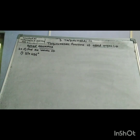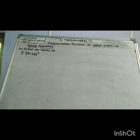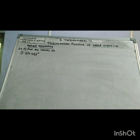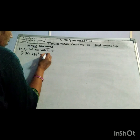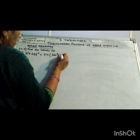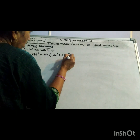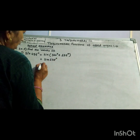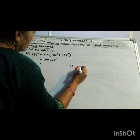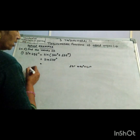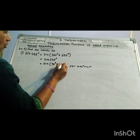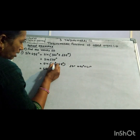Trigonometric functions of allied angles — Example 1: Find the value of sin(495°). Now 495 = 360 + 135 degrees, so sin(495°) = sin(360° + 135°) = sin(135°). And 135 degrees means 90° + 45°, so sin(135°) = sin(90° + 45°).